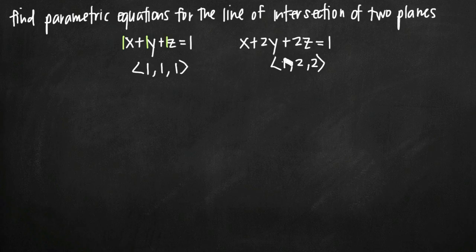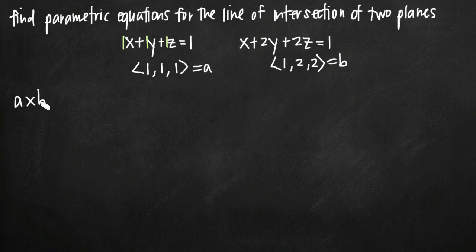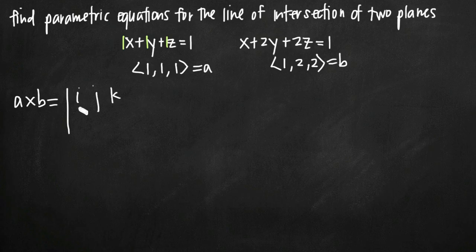Our next step is to take the cross product of these normal vectors. We'll call them vector A and vector B. We're going to take the cross product of A and B, which equals our 3x3 matrix used to find the cross product, where in the first row we put i, j, and k; in the second row we put vector A: 1, 1, 1; and in the third row we put vector B: 1, 2, 2.